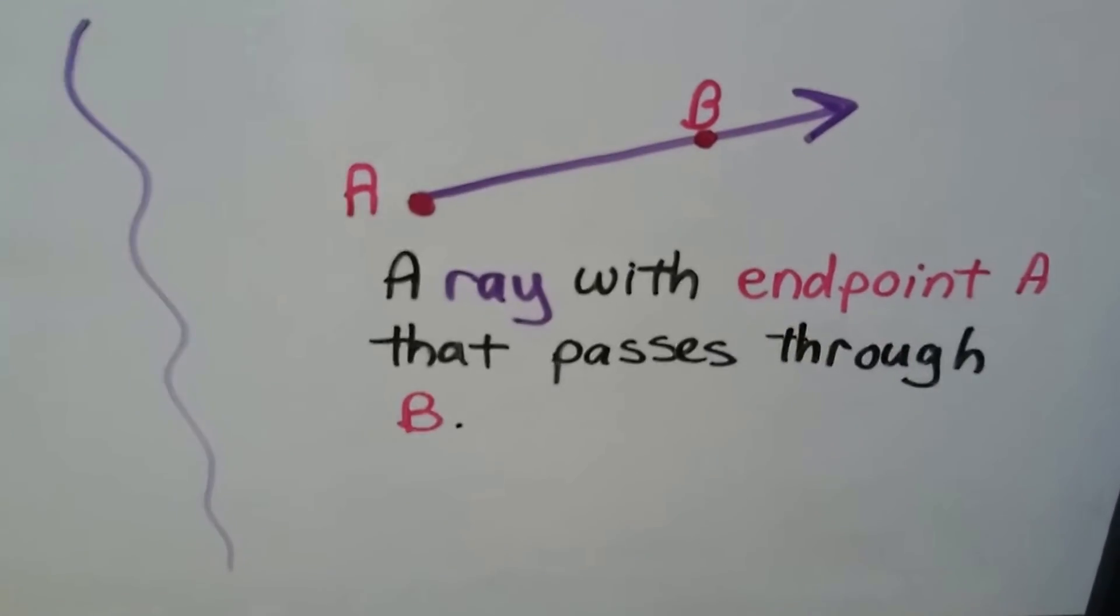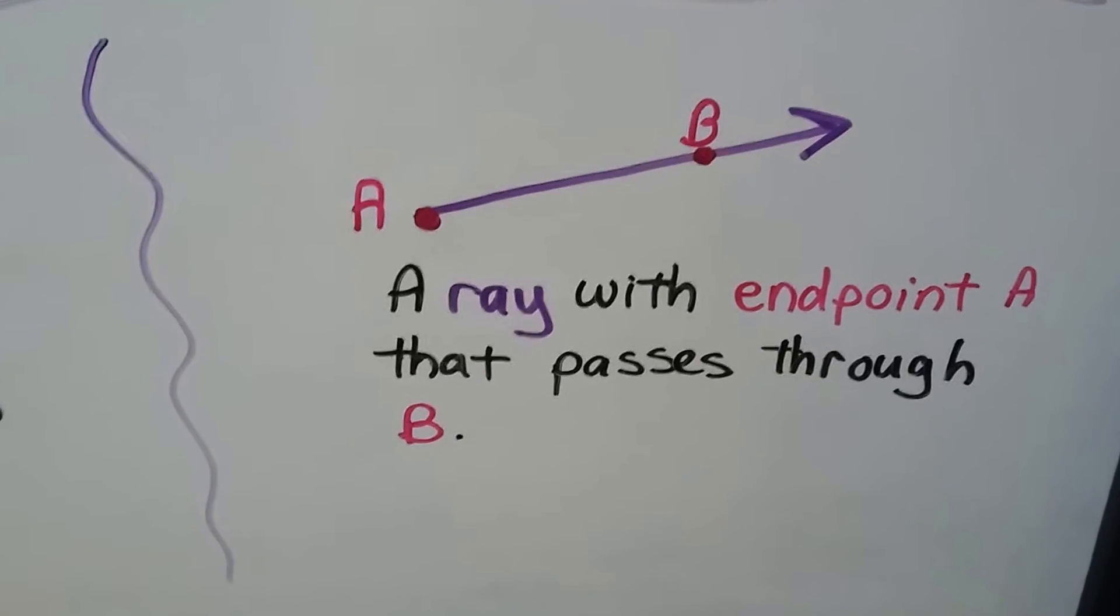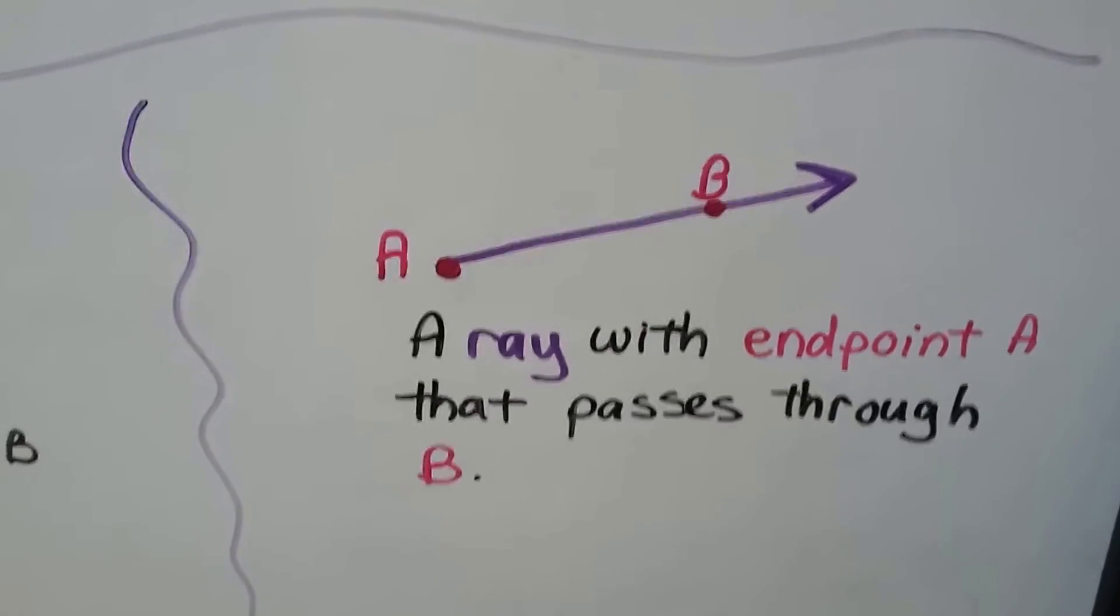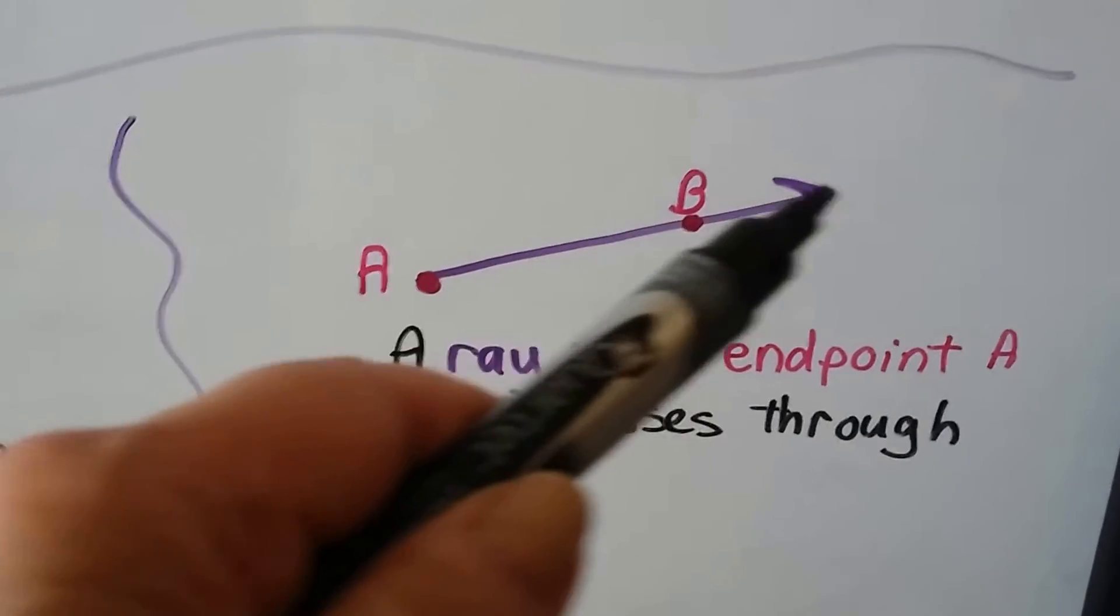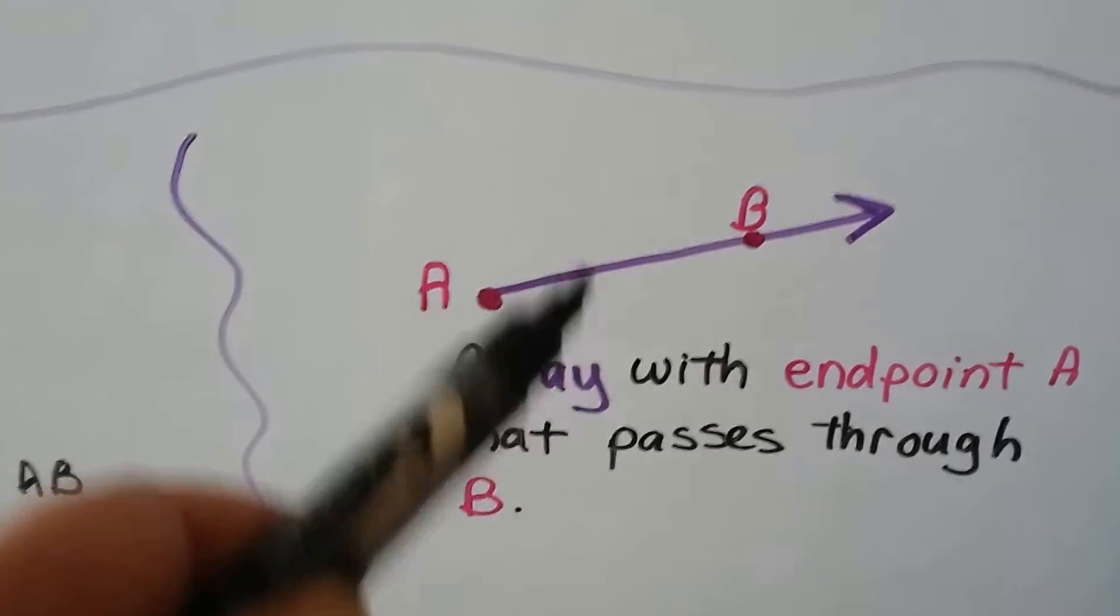Here we have a ray with endpoint A that passes through B. So here's endpoint A, and the ray is going through the point B.